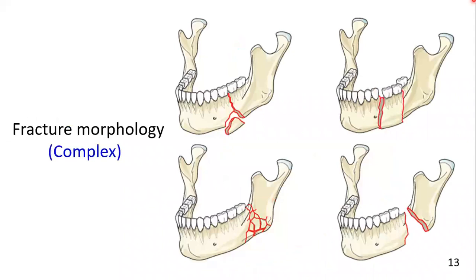Complex fractures involve at least two fracture lines and three or more fragments in the same region of the mandible. Complex fractures include basal triangle wedge fractures, segmental fractures, comminuted fractures, and defect fractures.